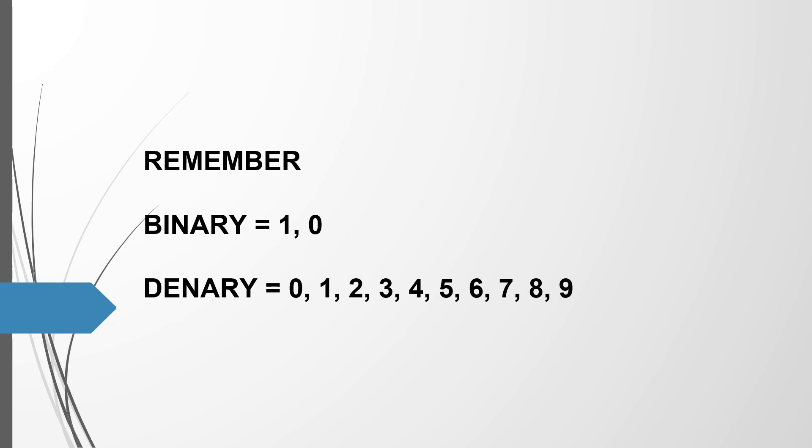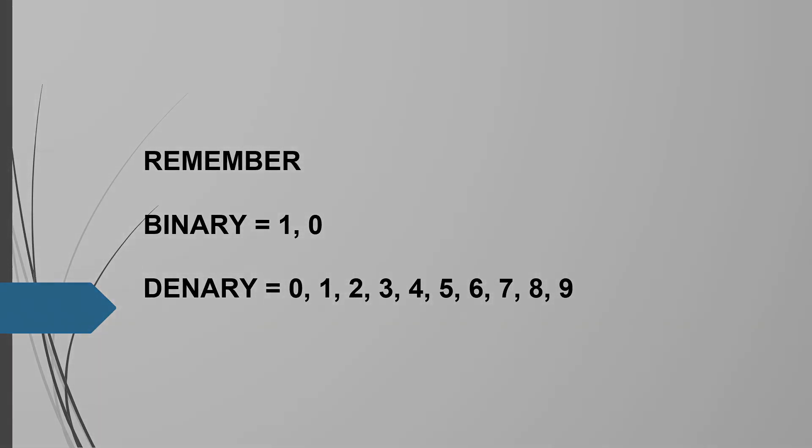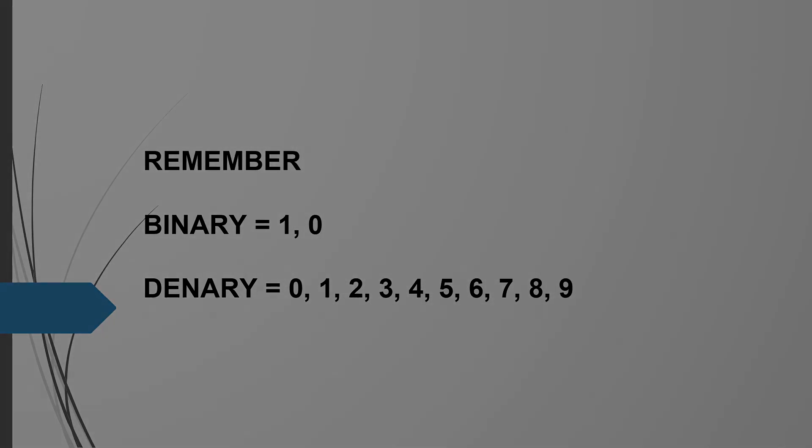Binary works in base two: one and zero. And denary works in base ten: zero, one, two, three, four, five, six, seven, eight, nine. Why do we call it base two? Because base two uses two numbers, one and zero. And why do we call it base ten? Because denary uses ten digits, zero to nine.